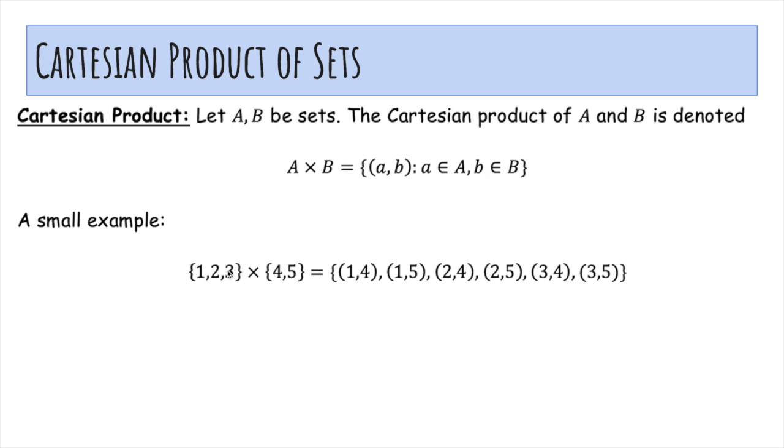So a small example: {1,2,3} × {4,5} is the set of size 6 with (1,4), (1,5), (2,4), (2,5), (3,4), and (3,5).